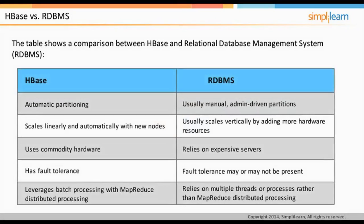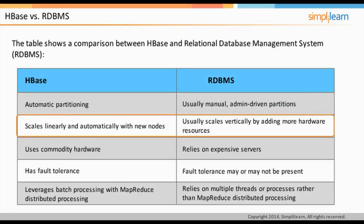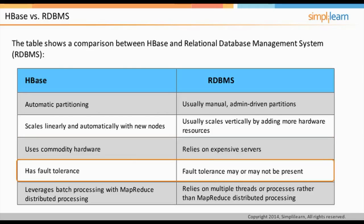HBase provides certain advantages compared to RDBMS. HBase allows automatic partitioning versus manual partitioning in RDBMS, and can scale linearly and automatically with new nodes, whereas RDBMS usually scales vertically. As part of the Hadoop ecosystem, HBase uses commodity hardware, while RDBMS relies on expensive servers. HBase has built-in fault tolerance mechanisms and leverages batch processing with MapReduce distributed processing, whereas RDBMS relies on multiple threads or processes.